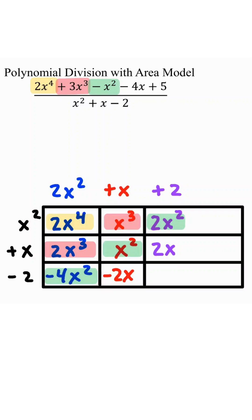x times 2, 2x, negative 2 times 2, negative 4. Since we fill up the rows, section it off.